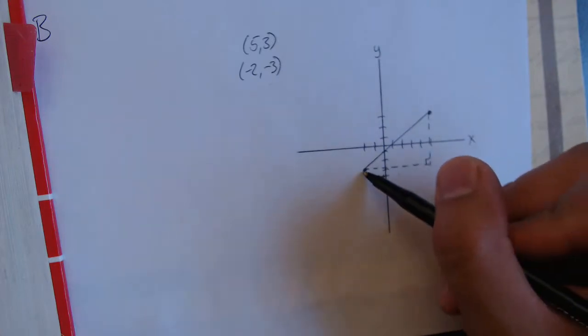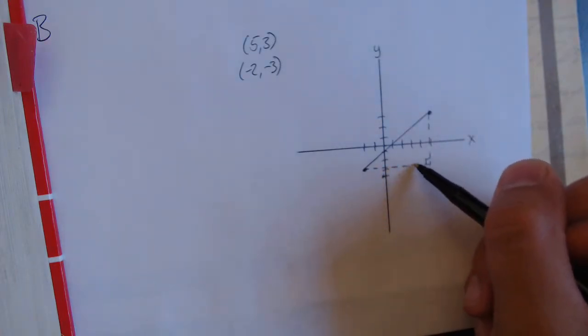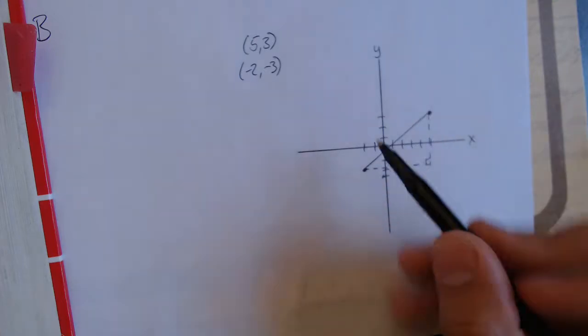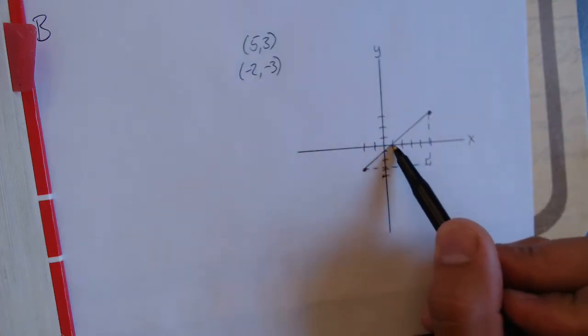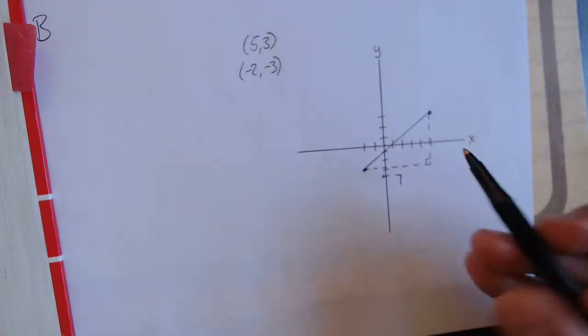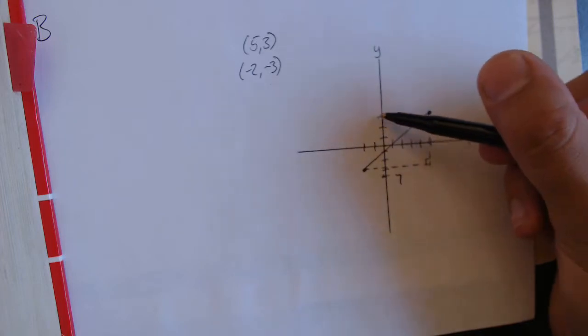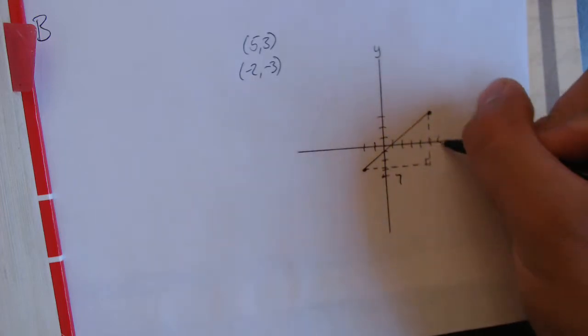So we'll count. From here we go 1, 2, 3, 4, 5, 6, 7 spaces. So this bottom half is 7. From here, this side, we count up 1, 2, 3, 4, 5, 5 spaces. So this side is 5.